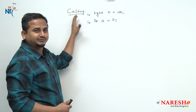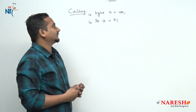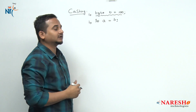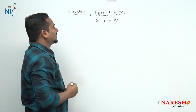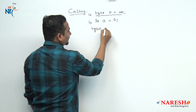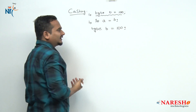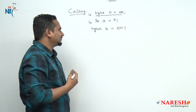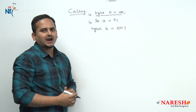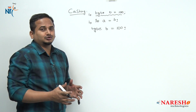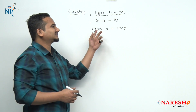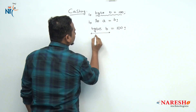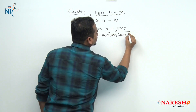Now, casting means converting from one data type variable value to another data type variable value is called casting. Before talking about types of casting and functionality of casting, first let me highlight what is the internal flow in this statement. Whenever we write byte b equal to 100, internally a lot of things will happen. This part we can call as destination place and this one we can call as source place.